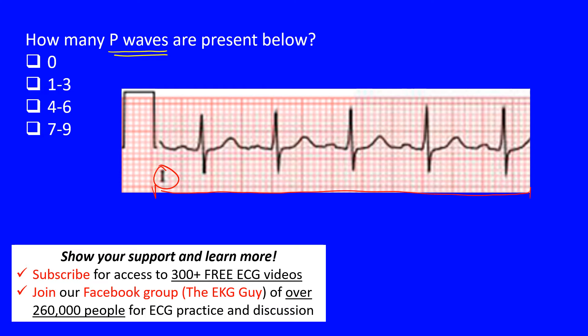Remember, the normal cardiac cycle has a P wave that you can see here. Then we have the QRS complex — this is an R wave, and this is an S wave — and then you have a following T wave. This portion here is the QRS.